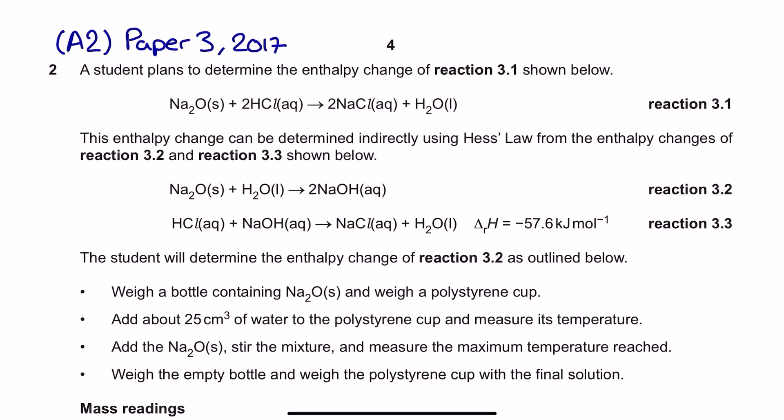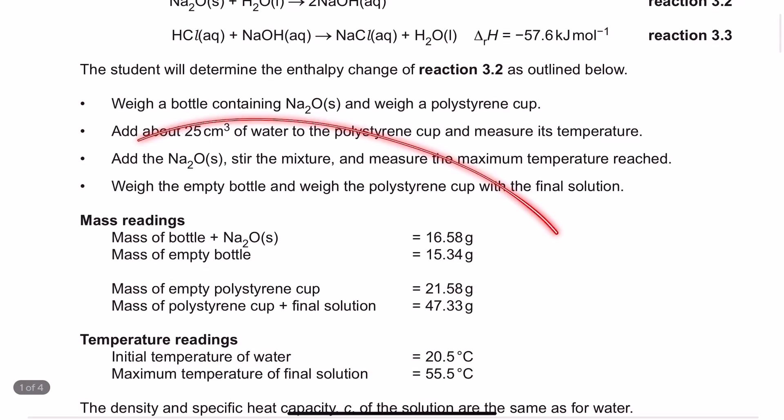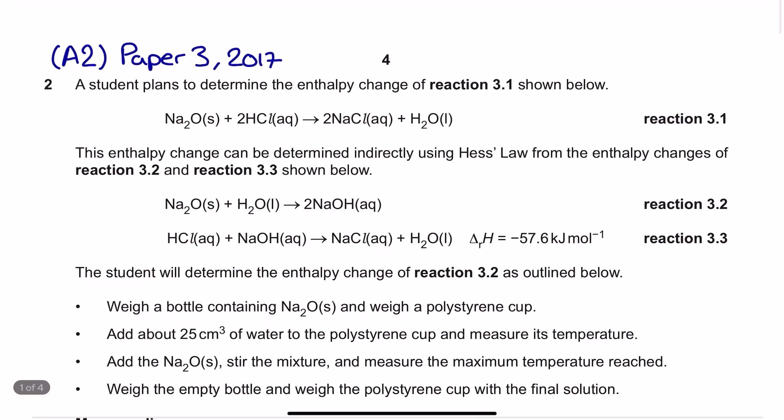You have already been given the enthalpy change of reaction for reaction 3.3, which is negative 57.6 kilojoules per mole. Reaction 3.2 is going to be calculated using all of this calorimeter data. The final one, reaction 3.1, is going to be calculated by using these other two reaction enthalpy changes as an alternative route for that top process and the Hess cycle is going to be crucial for that.